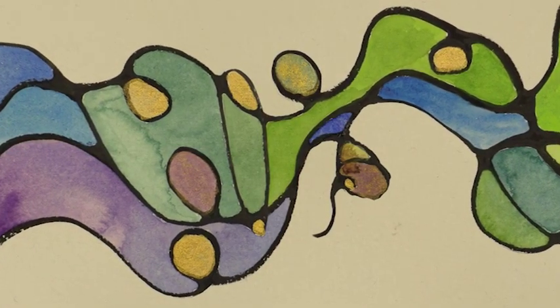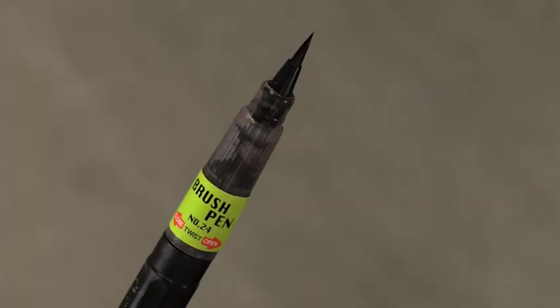So what we're going to need is a basic marker that is waterproof or water resistant. We're going to need paints, watercolors. We're going to use our Japanese watercolors from Grumbacher.